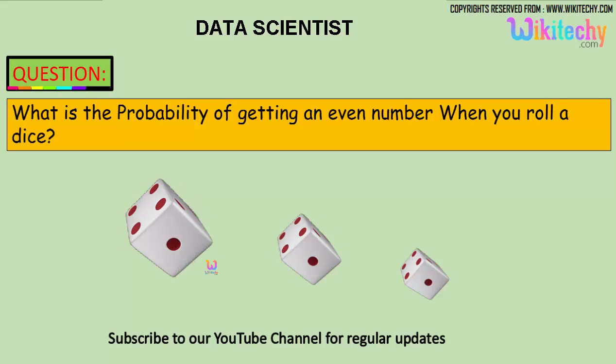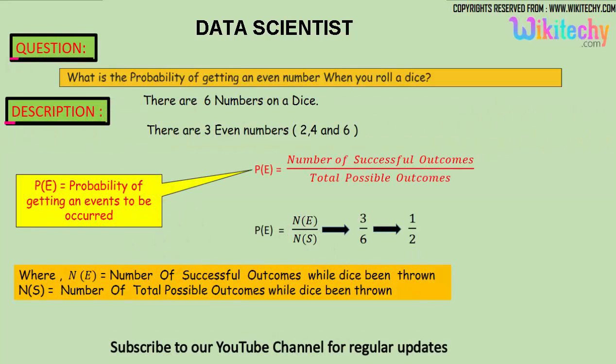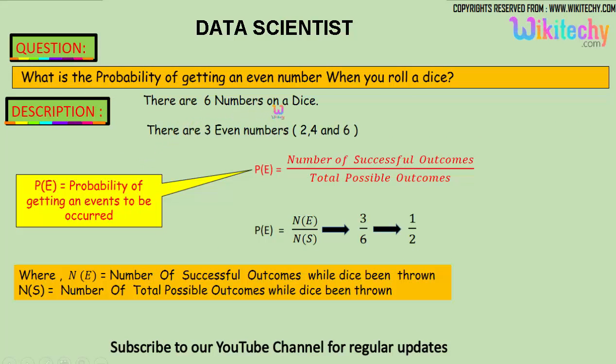What is the probability of getting an even number? That is the question. The answer is there are six numbers on a dice and we got three even numbers: two, four, and six.